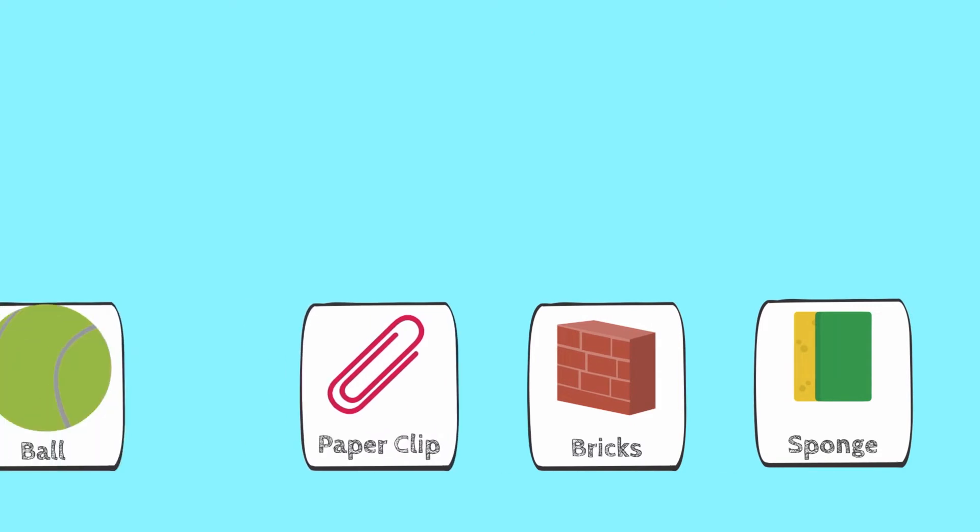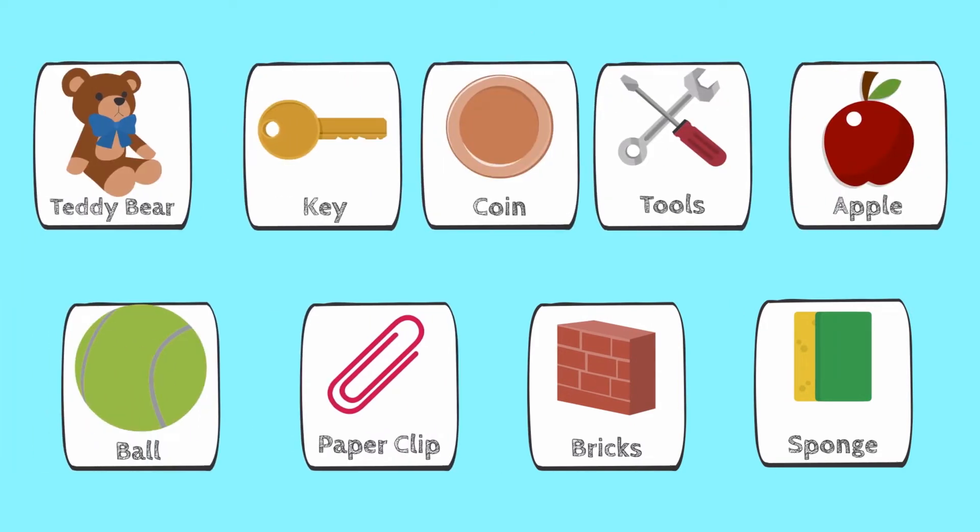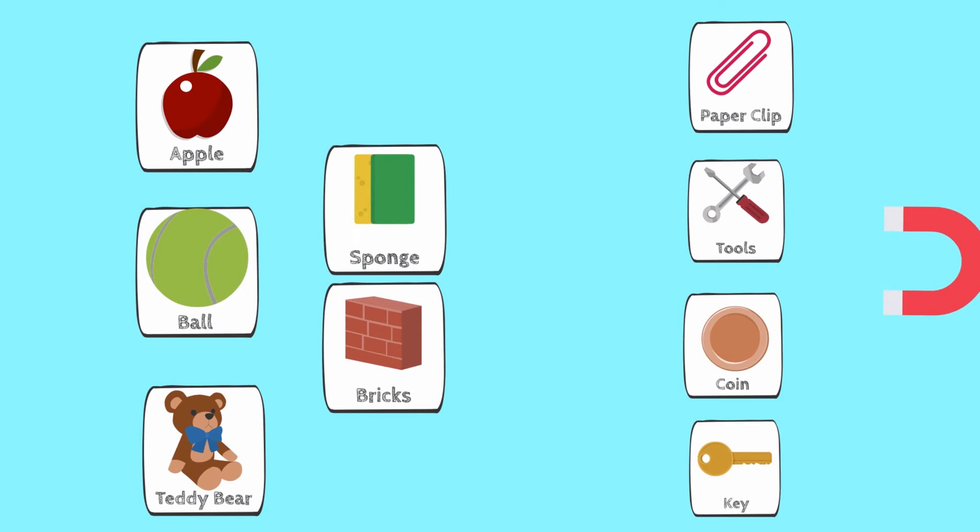We can identify different objects and separate them according to their magnetic properties by testing them. If we were to try to separate a bag full of different items using a magnet, we would notice that some objects are attracted to a magnet while others are not.